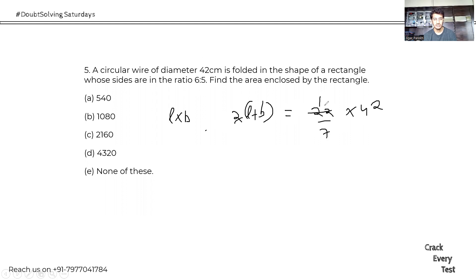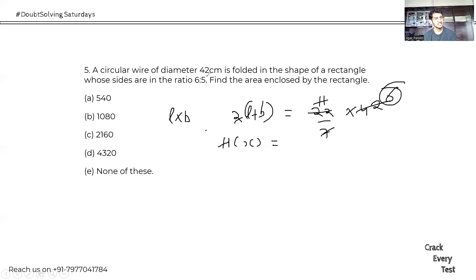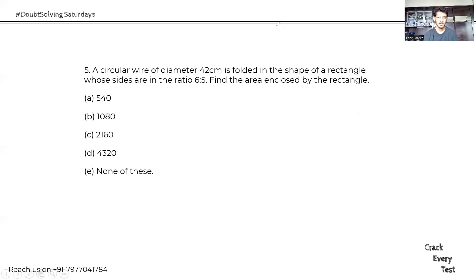The sides are 6x and 5x, so perimeter = 2(6x+5x) = 22x = 132, giving x = 6. Area = 6x × 5x = 30x² = 30 × 36 = 1080 cm². Just pure calculation, nothing else.